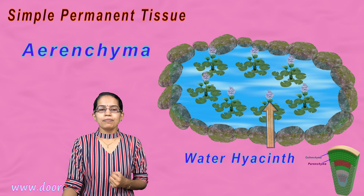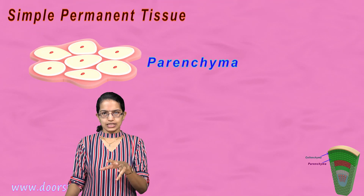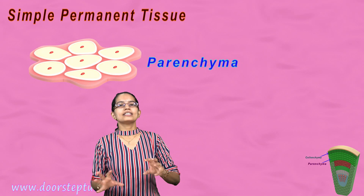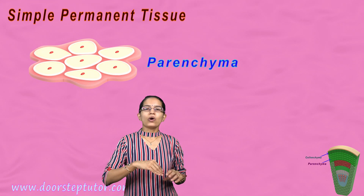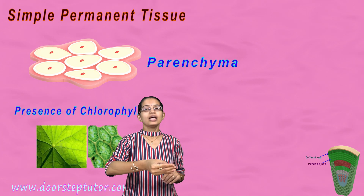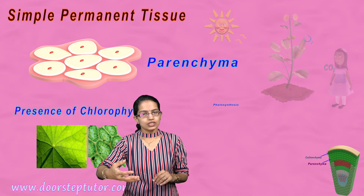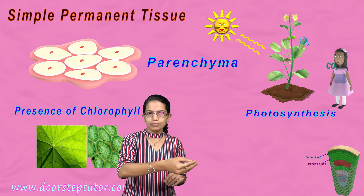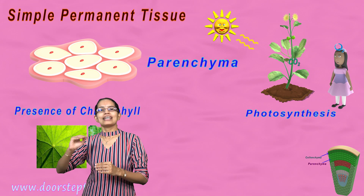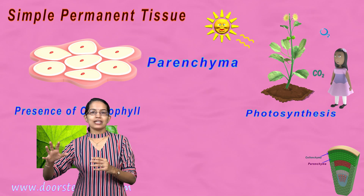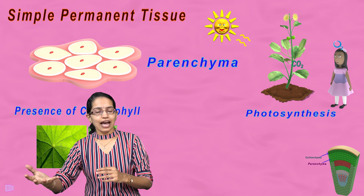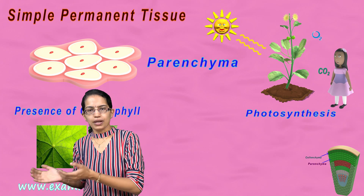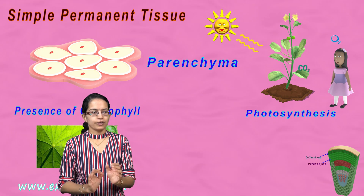So this parenchyma has two specialties. One is where we talk about the presence of chlorophyll and photosynthesis — we call it chlorenchyma. In the next case, we call it erenchyma, where you have air cavities for buoyancy and it helps the aquatic plants float.